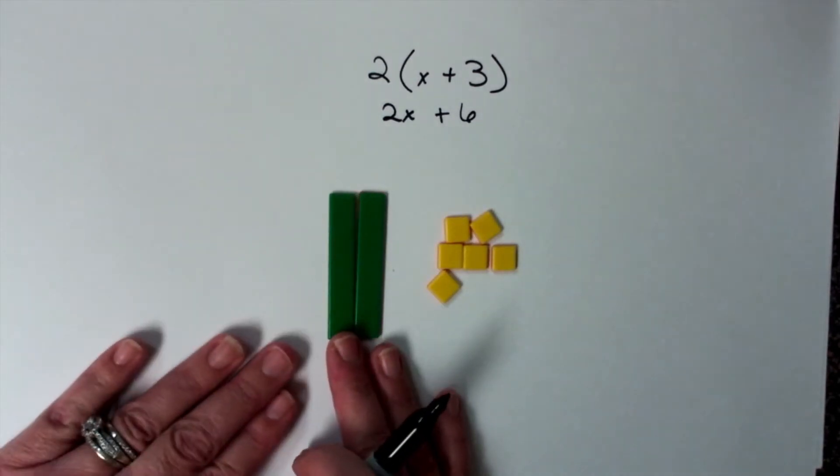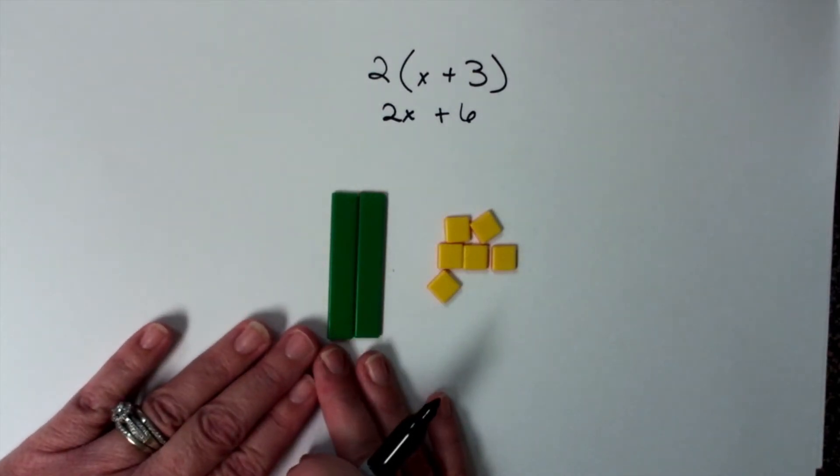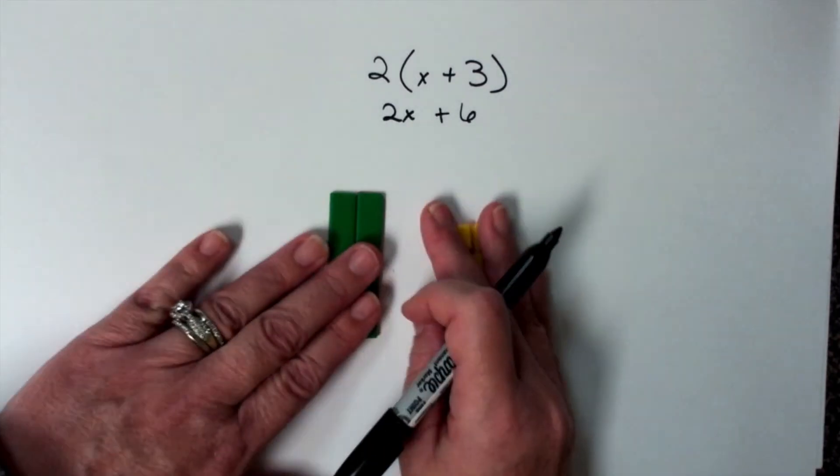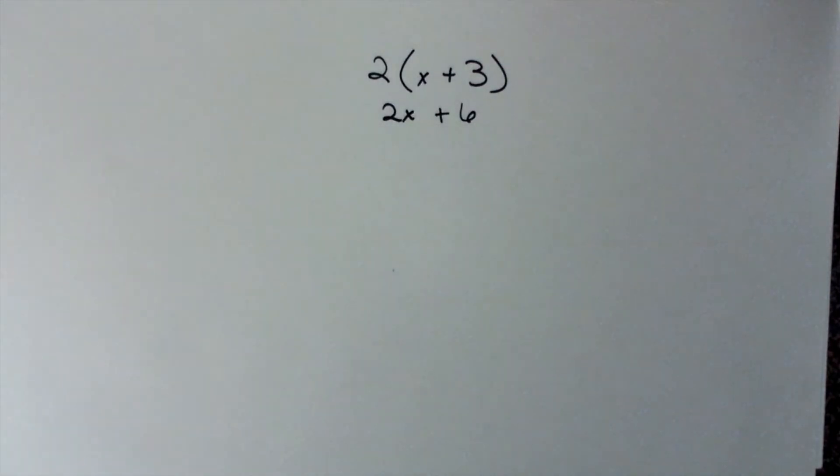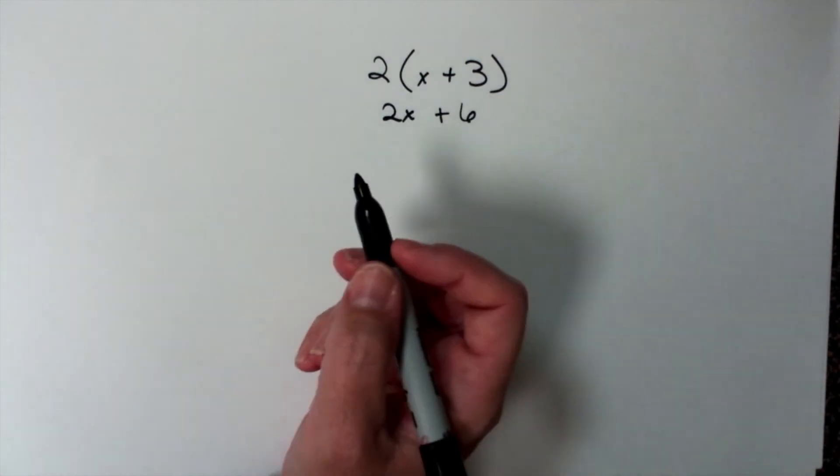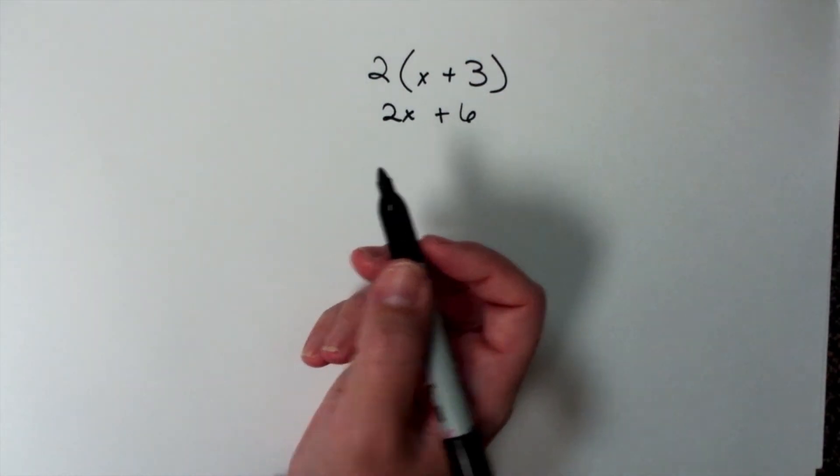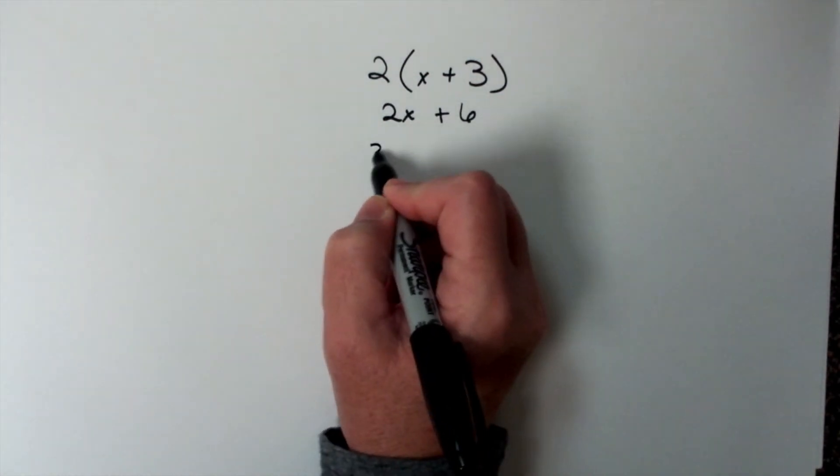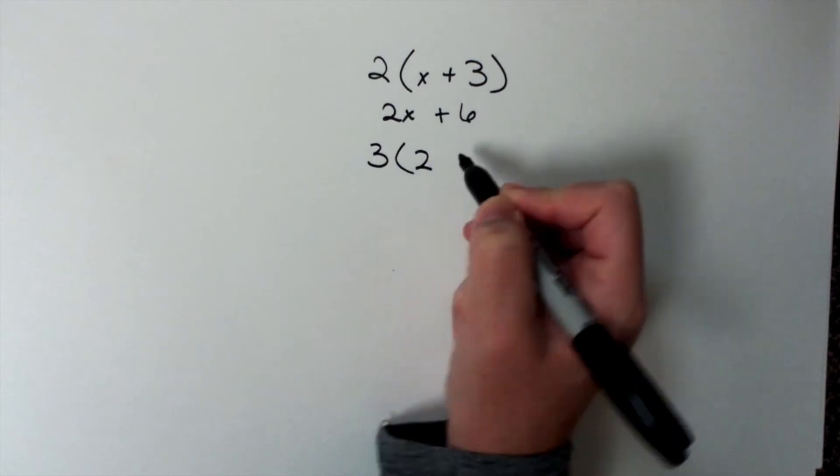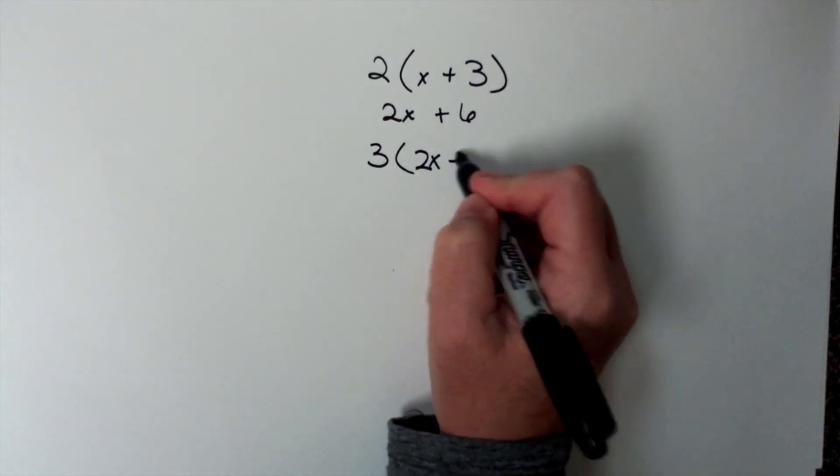So this is how I like to do that: 2x plus 6. Let's do another one. Let's do three groups of 2x plus 1.